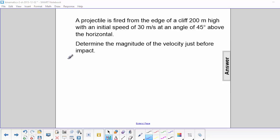A projectile is fired from the edge of a cliff 200 meters high with an initial speed of 30 m/s at an angle of 45 degrees above the horizontal. Determine the magnitude of the velocity just before impact.